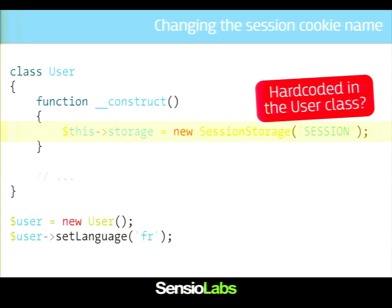If I want to use the session storage for other objects, I will need to duplicate this value everywhere. So if I want to change the session name, I will need to change all the classes depending on the session storage. If you think about having a much bigger app with tens of classes and tens of arguments, it's not really scalable.